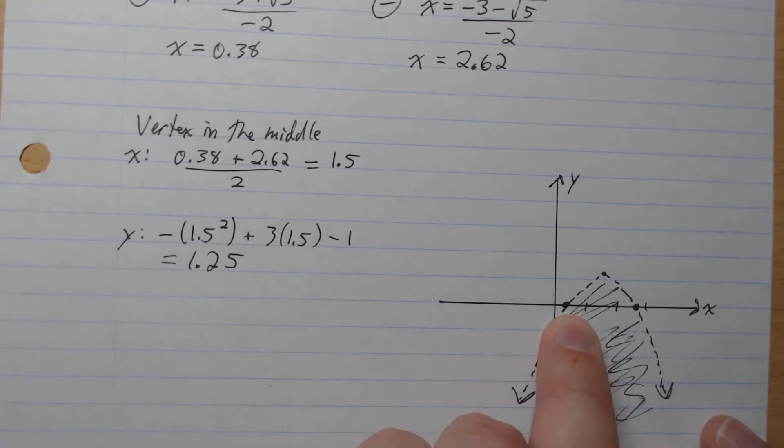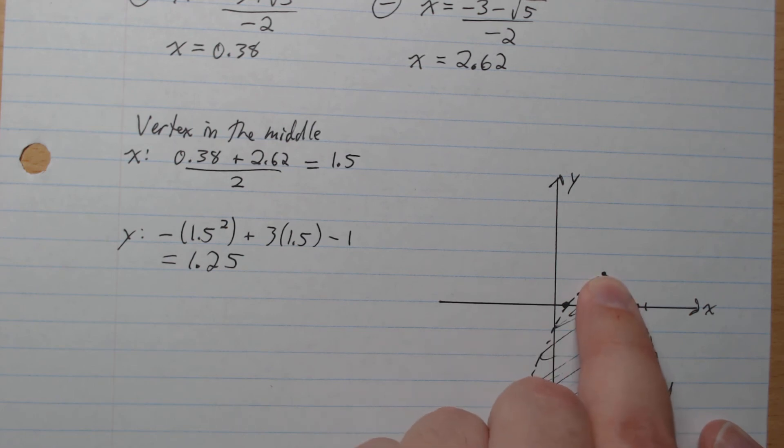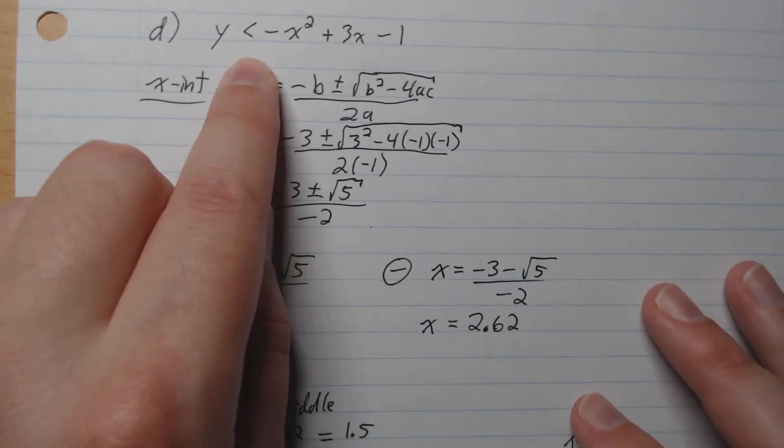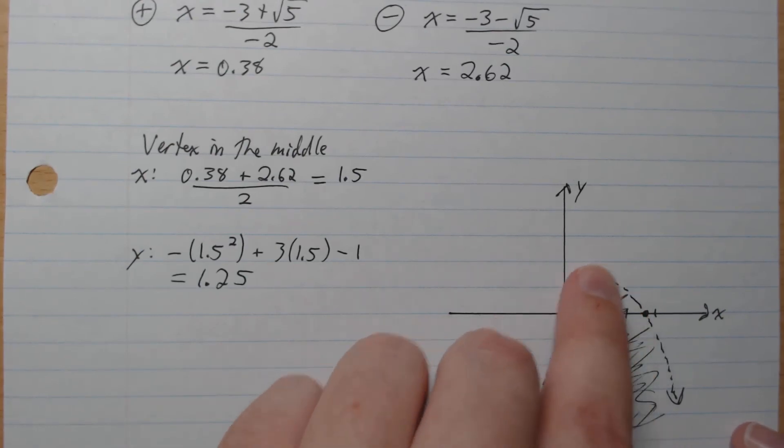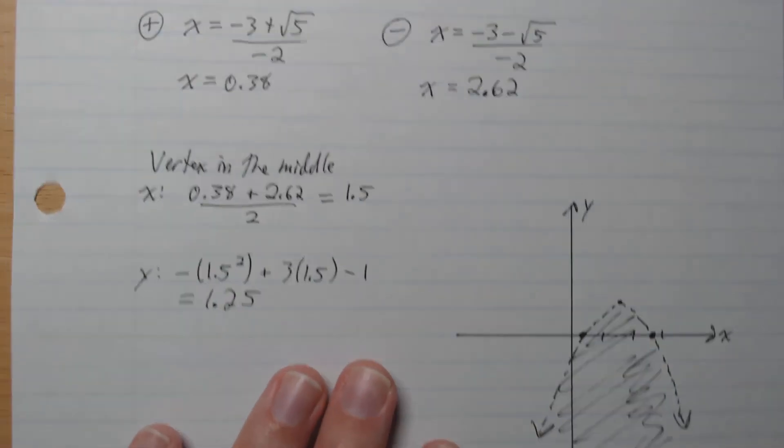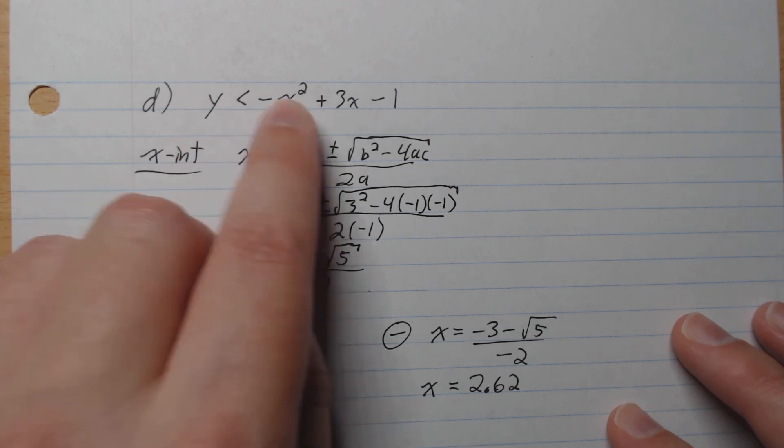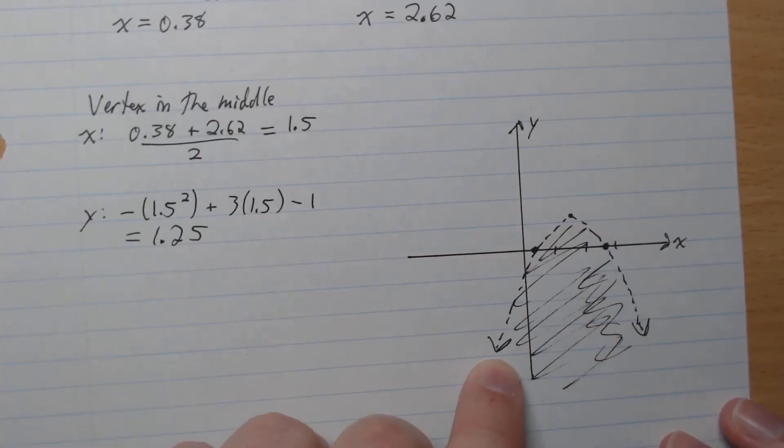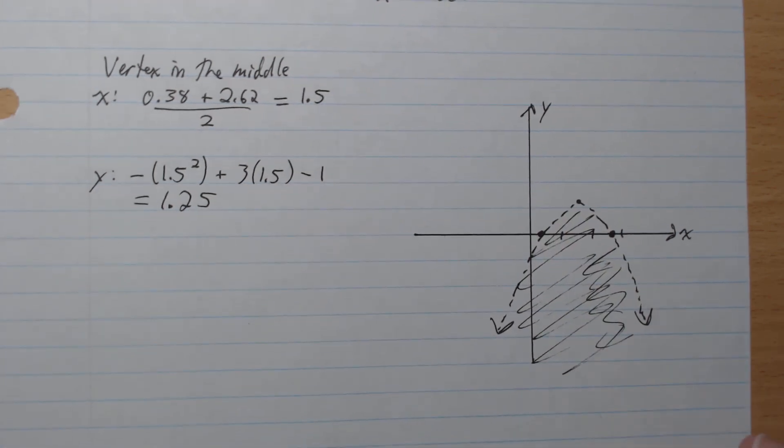So here we are, 0.38, 2.62, 1.25, sorry, 1.5, 1.25 like that. And so there is the graph of our function. It is not equal. So it is a dashed boundary line. And we're looking for y being underneath below that function. Less than. So there's our function. And it's the solution region underneath that function there. And so there's the graph of the inequality.